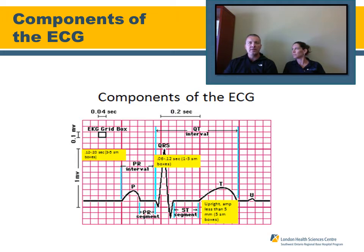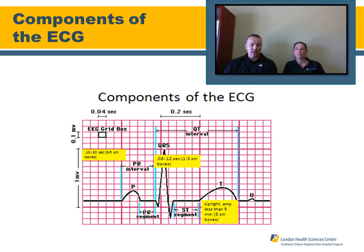Looking at the boxes on the ECG: one small square box is 40 milliseconds, or 0.04 seconds. When looking at the PR interval, it should be between 120 milliseconds and 200 milliseconds, and should not be wider than 200 milliseconds — that's between three and five small boxes.